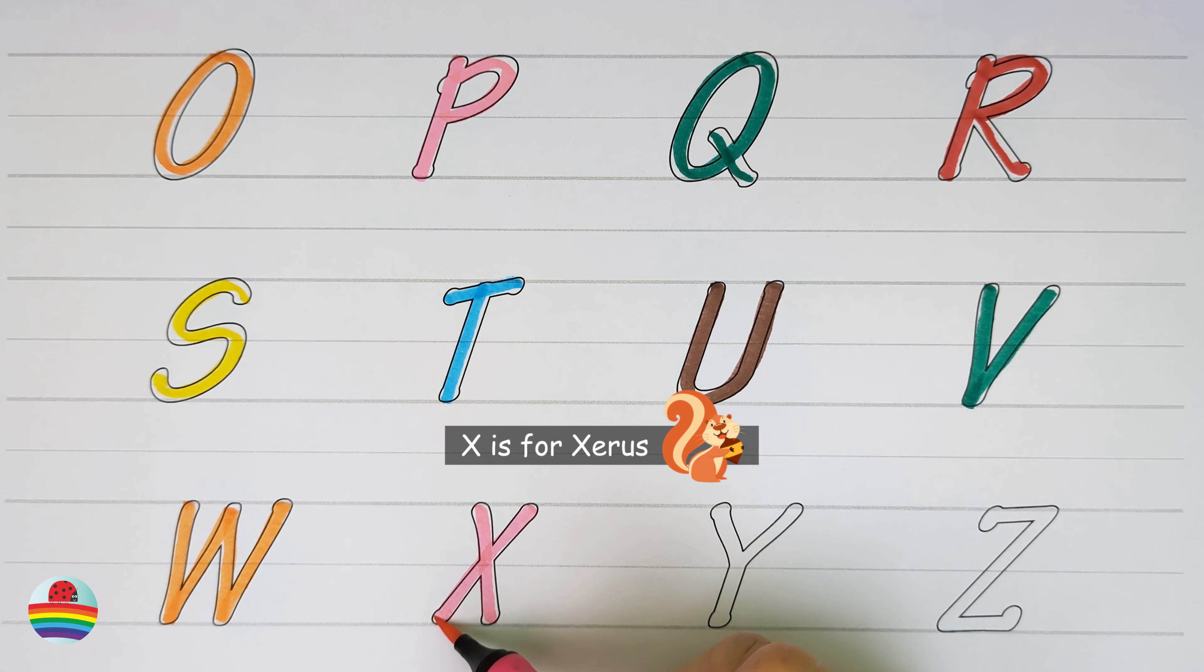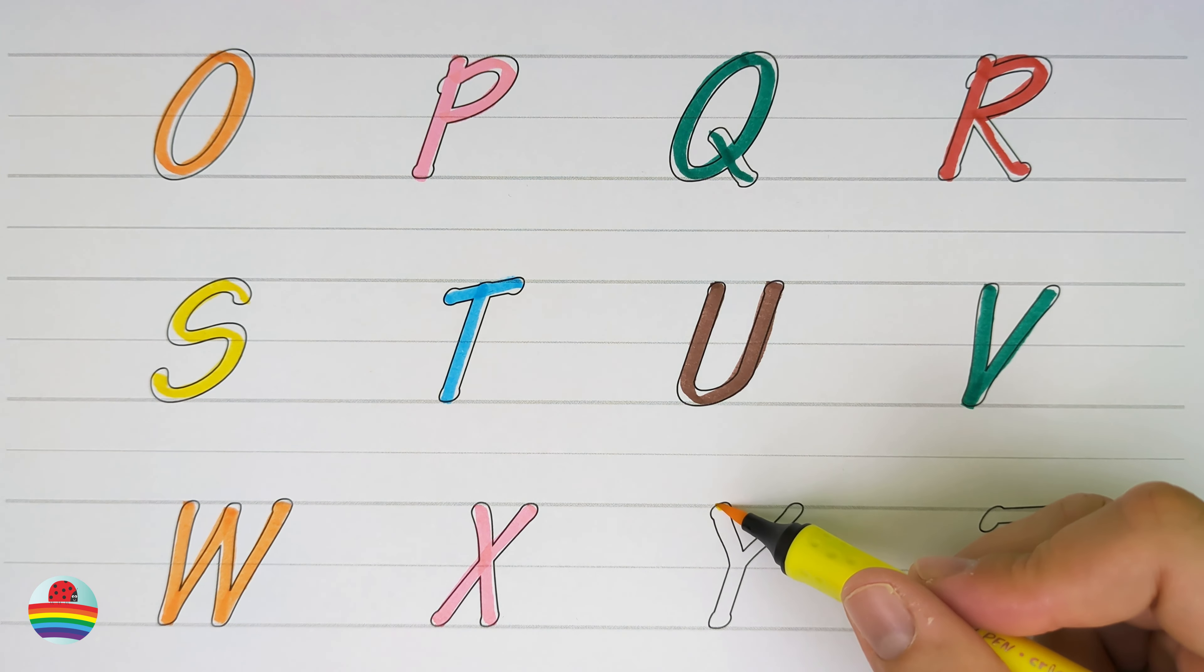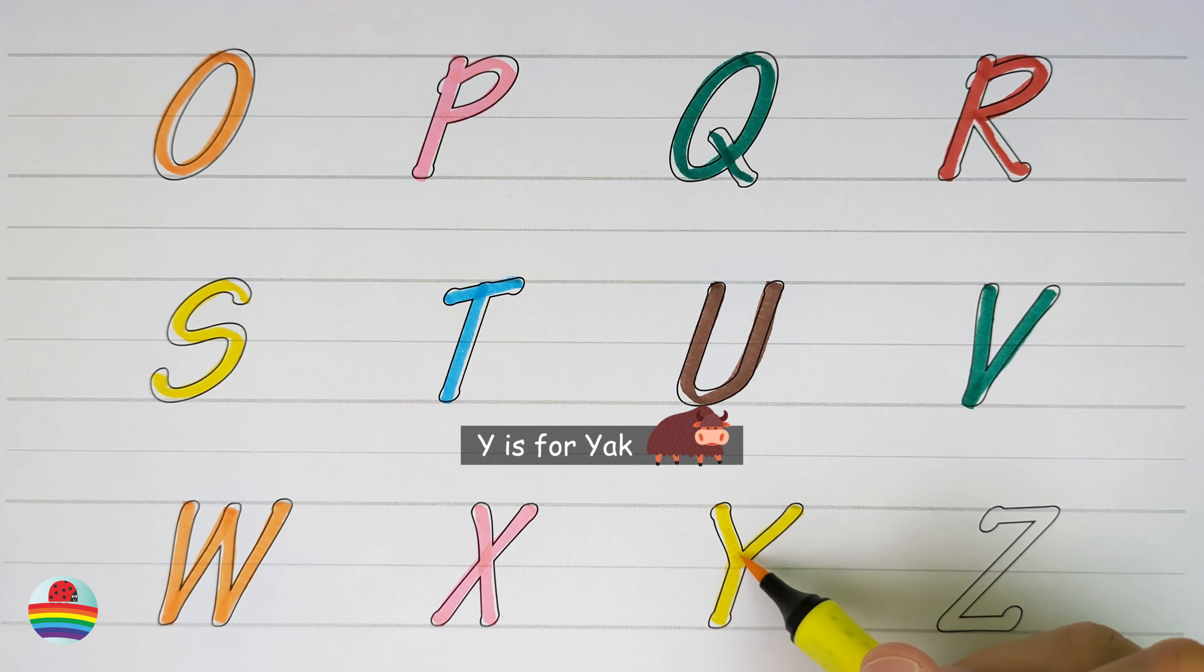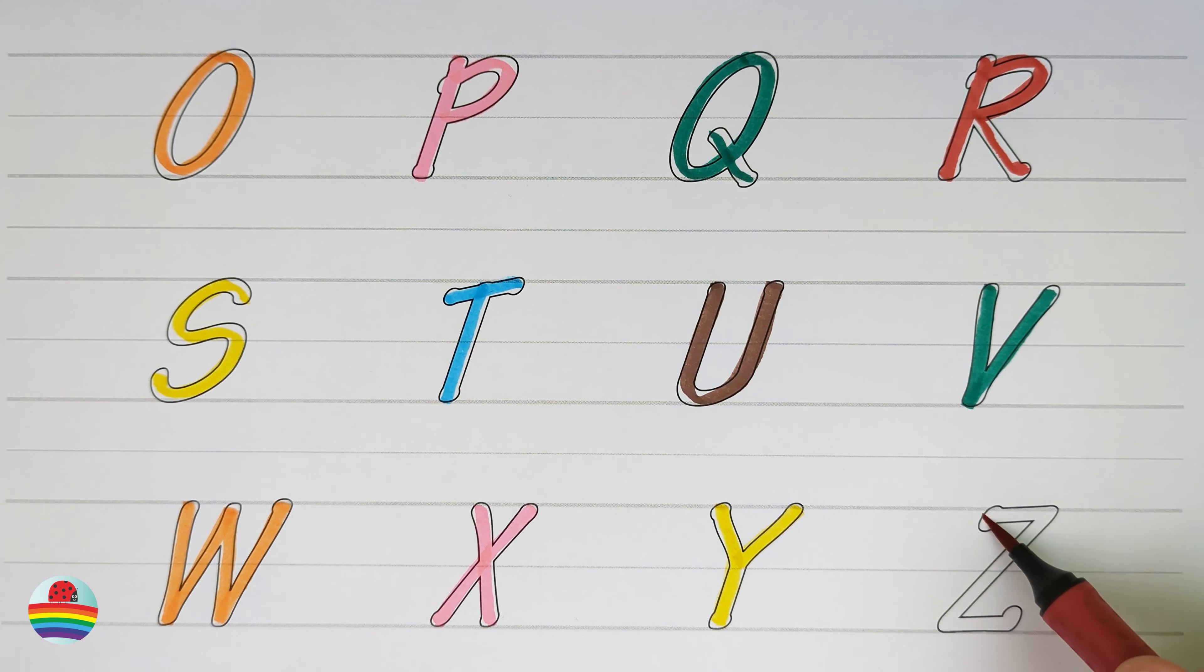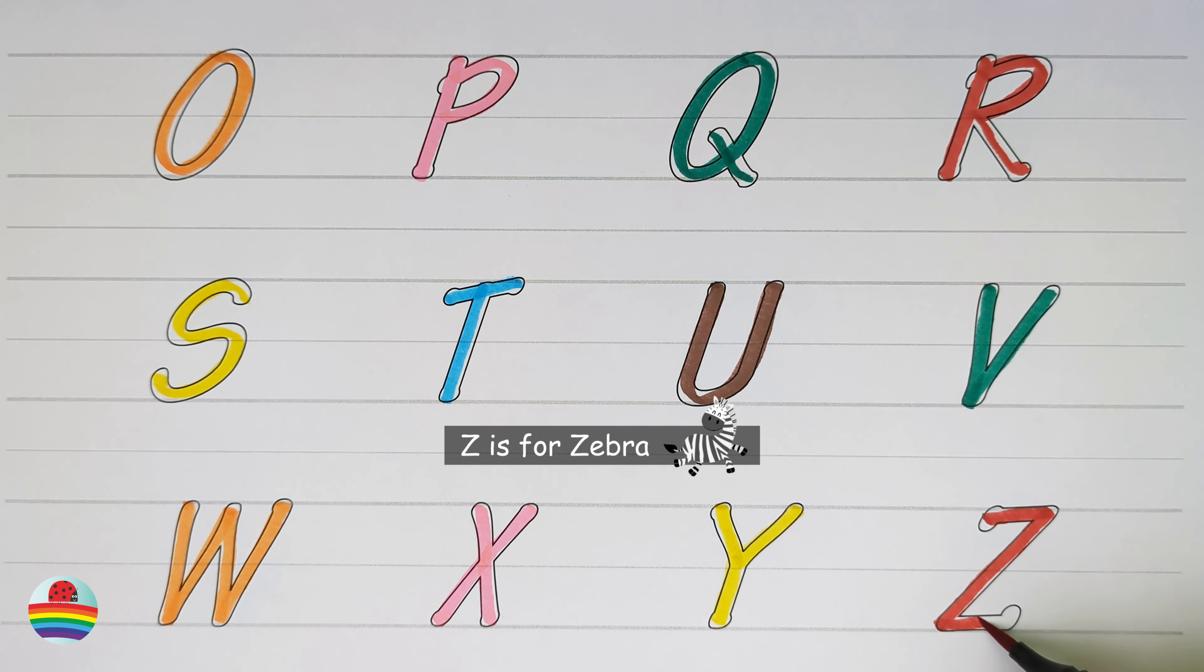X. X is for Xerus. Y. Y is for Yak. Z. Z is for Zebra.